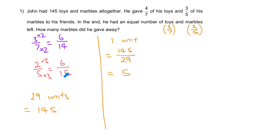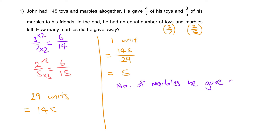Out of 15 units of marbles, there are 6 left, which means he gave away 9 units of marbles. So the number of marbles he gave away is 9 times 5, which gives you 45.